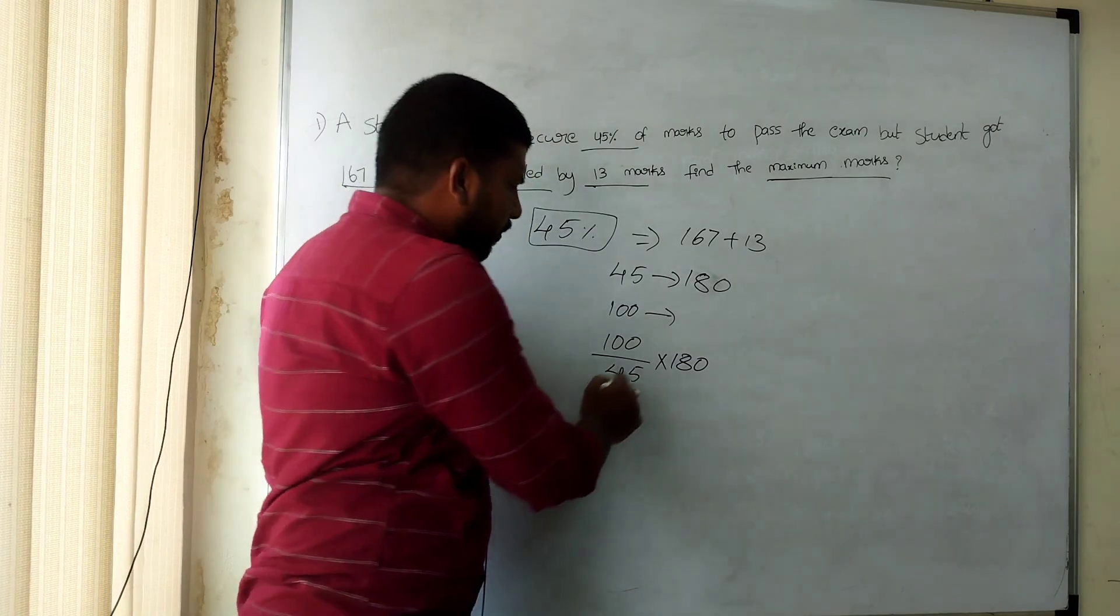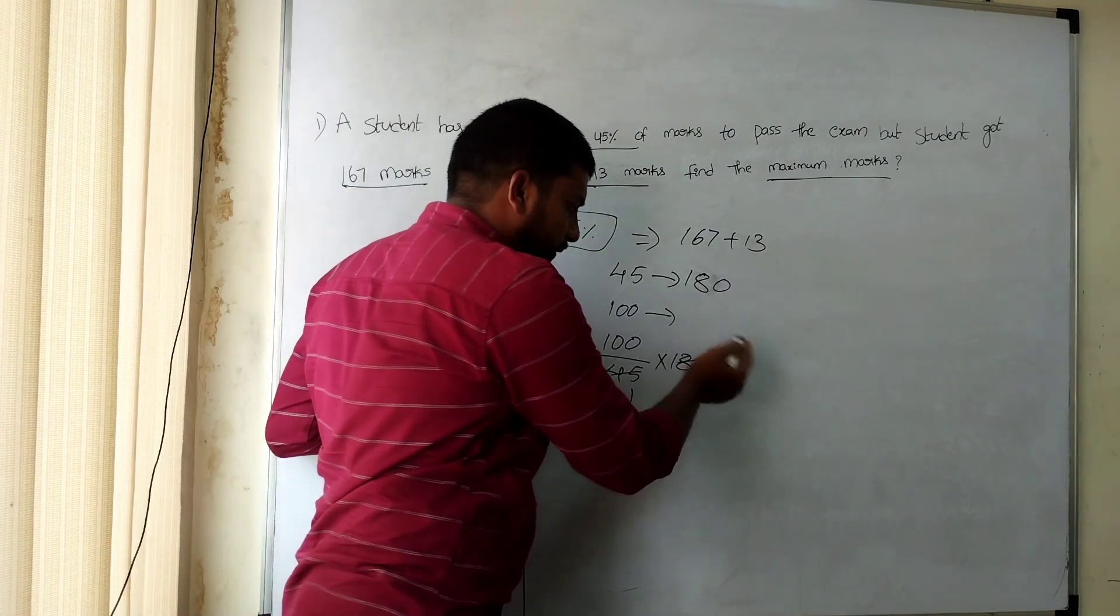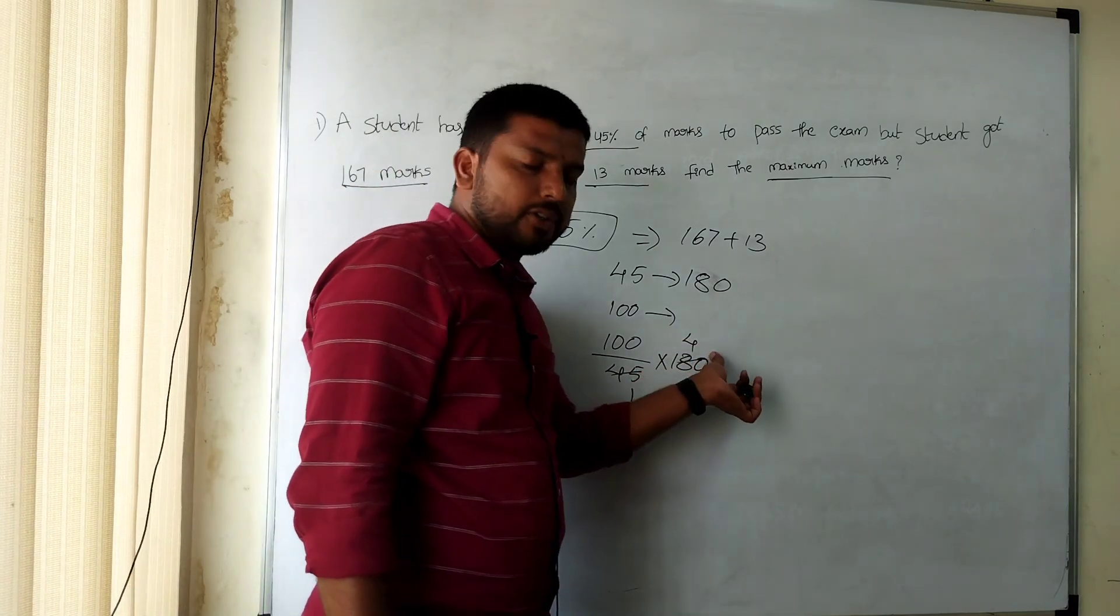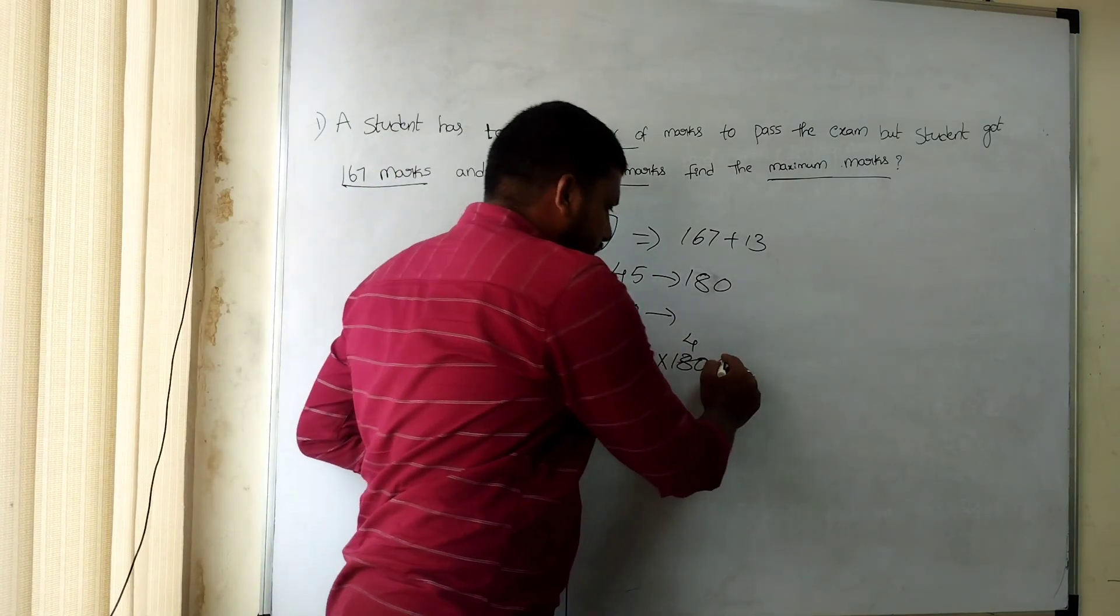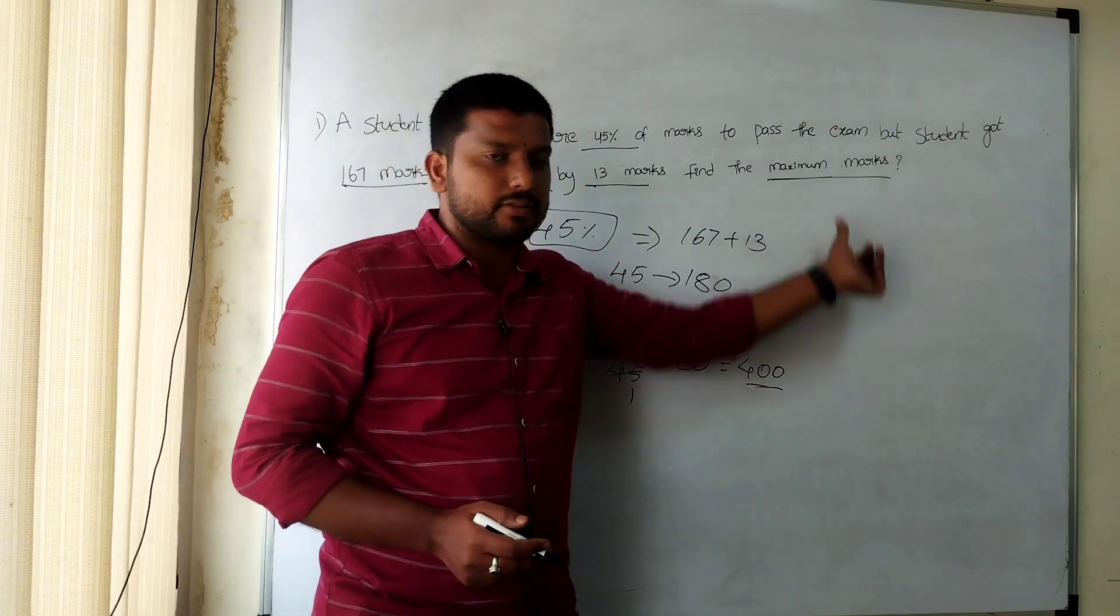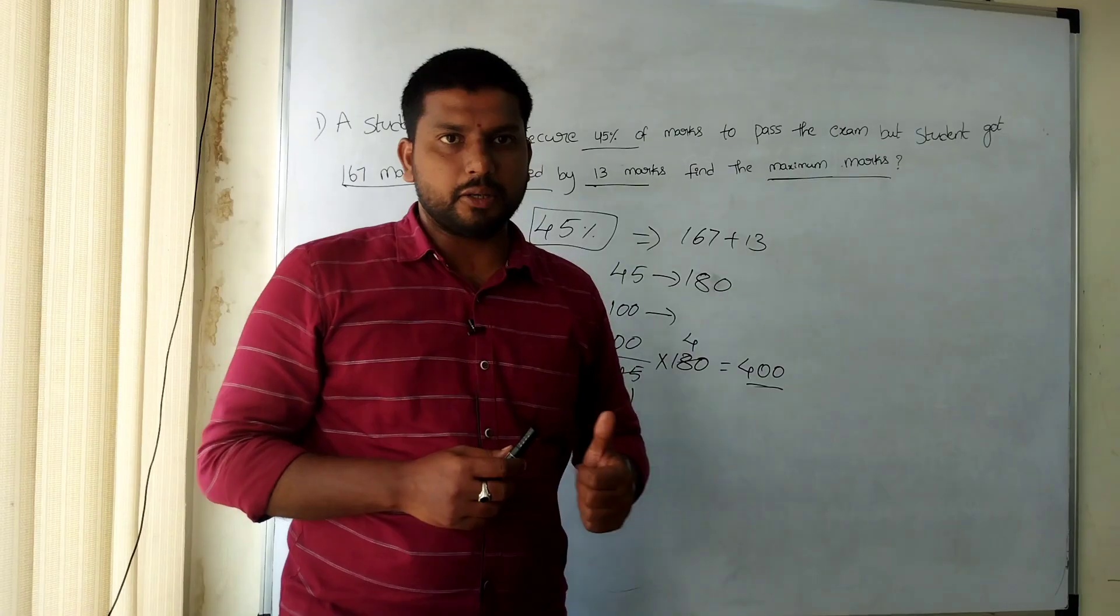45 times 1 and 45 times 4... 45 times 2 is 90, 45 times 4 is 180. Then 4 times 100 is 400. So in that exam, the maximum marks is 400. Thank you.